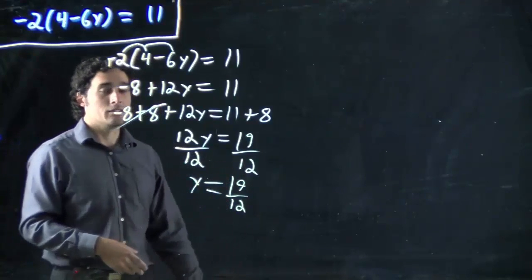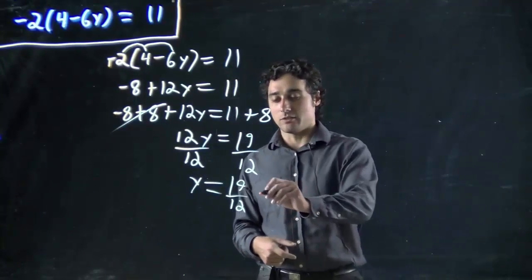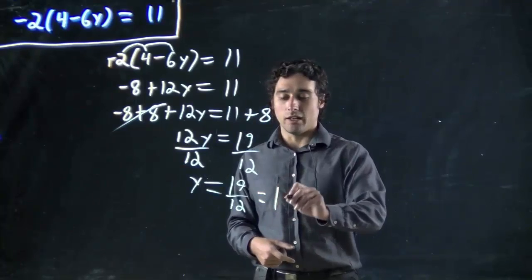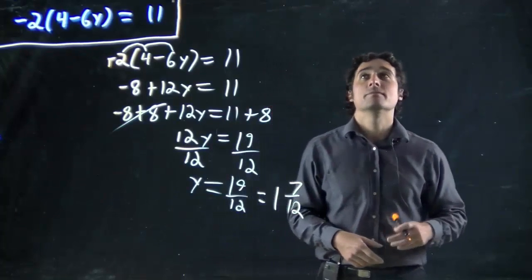Well, we've got an ugly fraction. So, oh well. If we wanted to, we could also think of this as 1 and 7 twelfths. Same difference. Great.